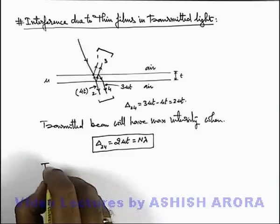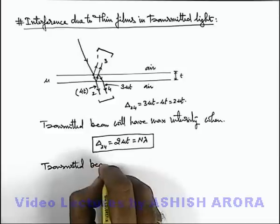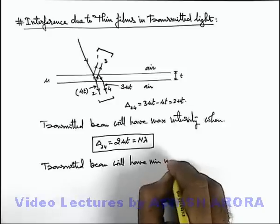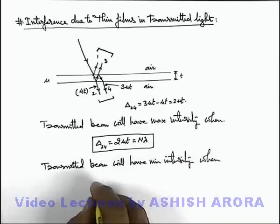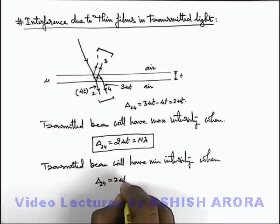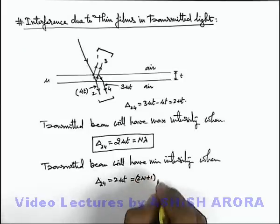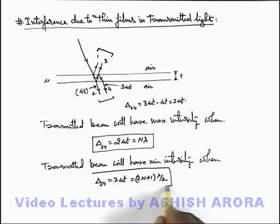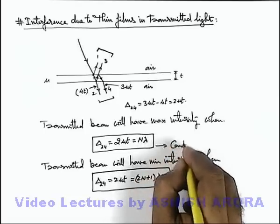Similarly we can write that transmitted beam will have minimum intensity when the path difference between the two beams constituting the transmitted beam, which is 2μt, this must be equal to an odd multiple of λ/2. That is the situation when the two waves interfere destructively. So this is the condition for constructive interference.